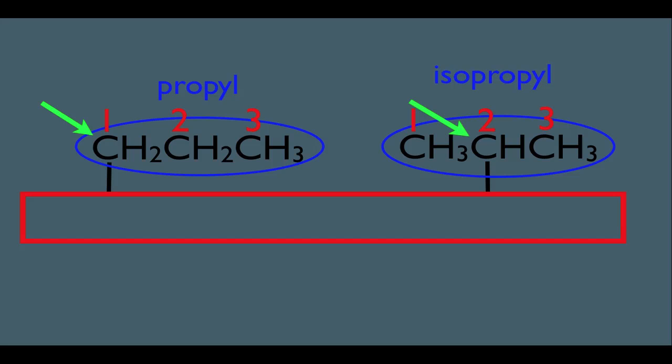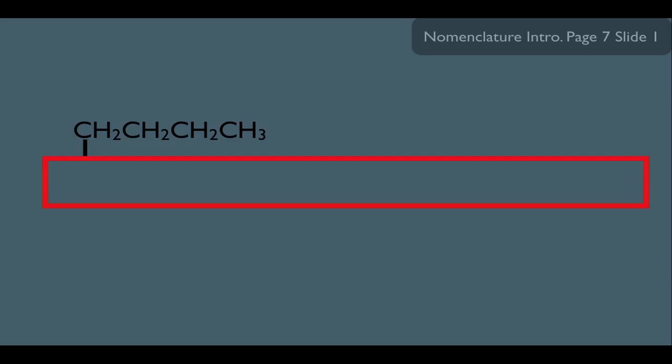Let me show you some other examples to make sure you got this. Again, let's say we're naming a molecule and this ends up being the longest chain. And let's say we have a substituent that looks like this. Notice that it is four carbons long, which means instead of being butane, because it's a substituent, we would say this is a butyl substituent.